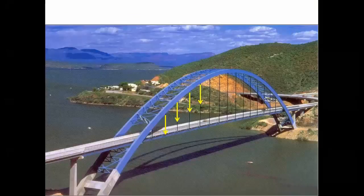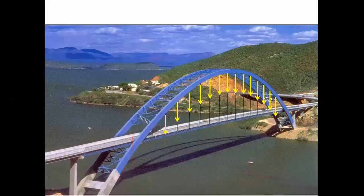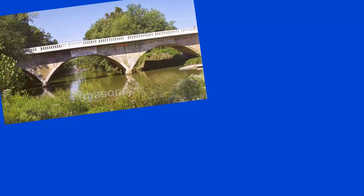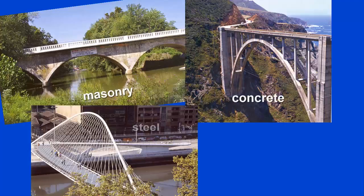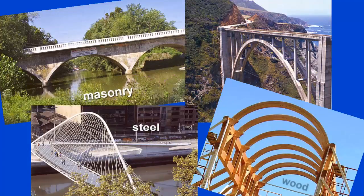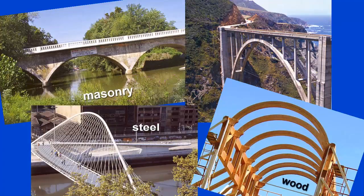Each of the vertical tension cables in the Arizona Roosevelt Bridge, built by the Kramer Company from Wisconsin, applies a load to the arch, keeping it in compression over its length. Masonry, concrete, steel, and wood are all used for arches.